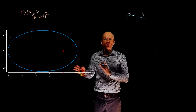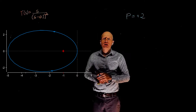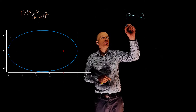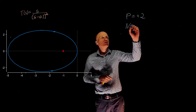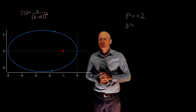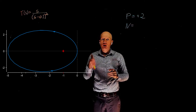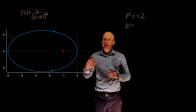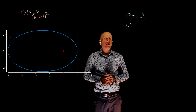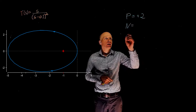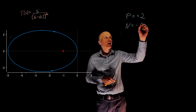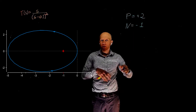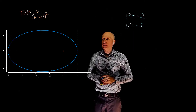Now, if you look at the Nyquist plot and count the number of encirclements of negative 1, we can see that this Nyquist plot encircles negative 1 one time in the counterclockwise direction, which means N is negative 1 — negative because it is in the counterclockwise direction.